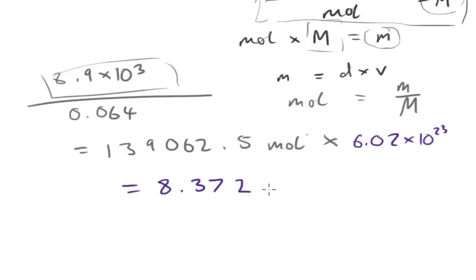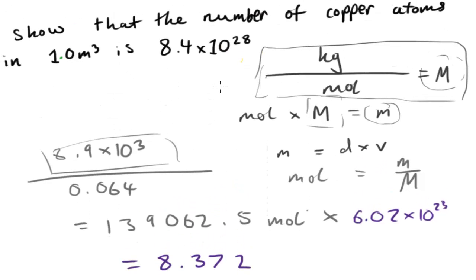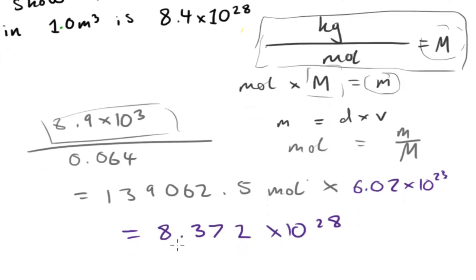I'll just round this to, as you can see it asks us to show that it's 8.4 times 10 to the 28. So I'm going to round it to 8.372 times 10 to the 28, and then we're going to round this again, just to show that we're getting this, which is equal to 8.4 times 10 to the power of 28 to one decimal place.